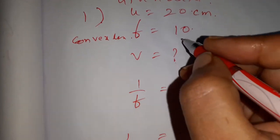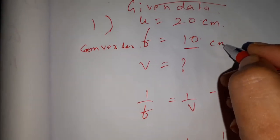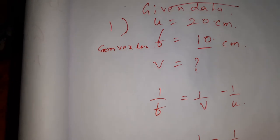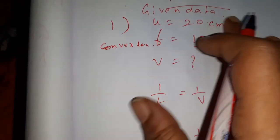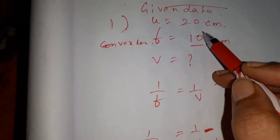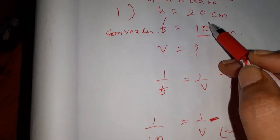So U is equal to 20 cm, that is at 2F. The object is placed at 2F, so here itself the clue is given. When object is placed at 2F, the image will be formed at 2F. So we got the answer, V is also 20 cm.